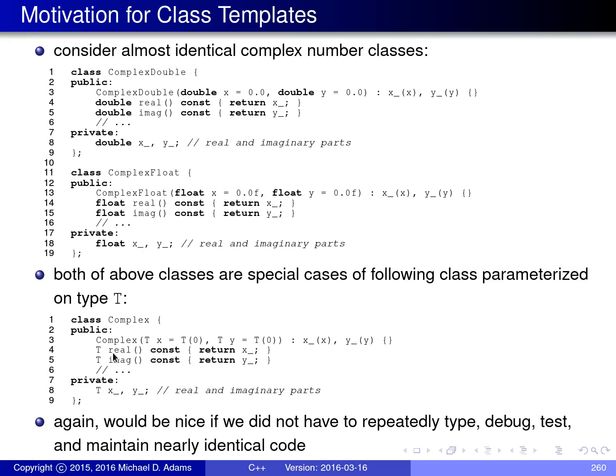Really, what we'd like to do is just write the code once in a more generic way. We can have a class called complex and use a placeholder — denoted by capital T — for the type of the data members representing the real and imaginary parts. We'd like to allow T to be anything, essentially parameterizing the class on type T. The reason is we don't want to duplicate lots of code, because with multiple copies we have to type, debug, and test it multiple times, and readers have to read through all those copies. This is the motivation and rationale for class templates.